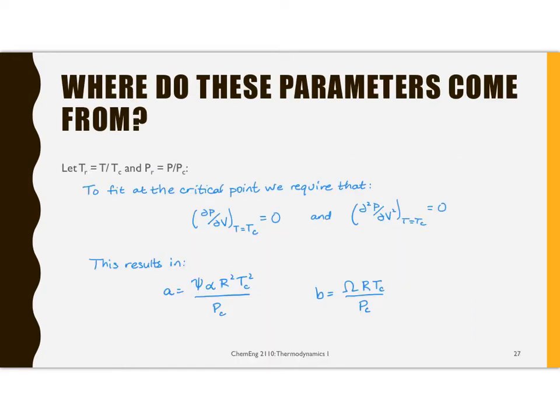The parameters come from forcing a fit at the critical point. And they do these in terms of Tr, which is T over Tc, and Pr, which is P over Pc, reduced critical properties.